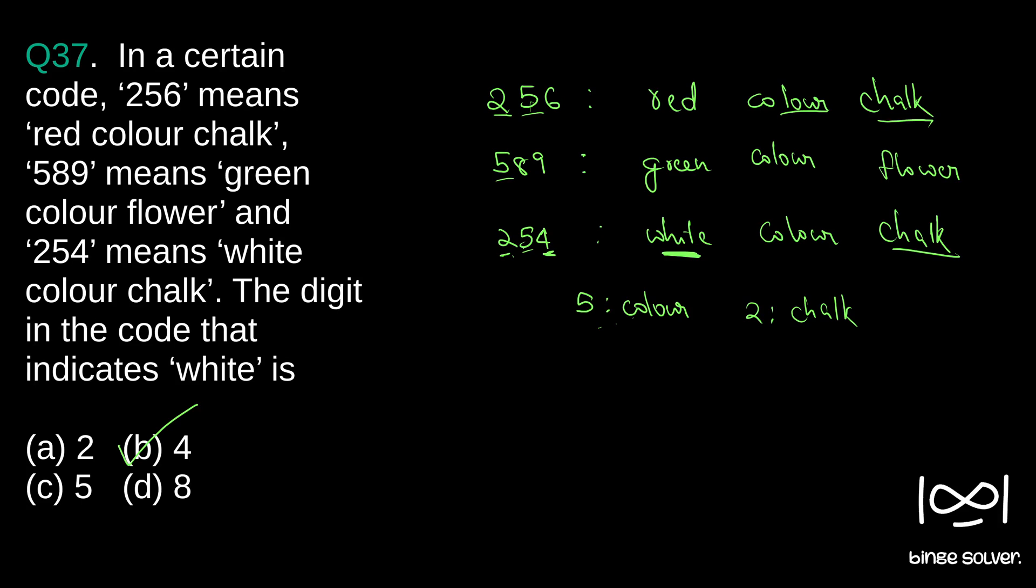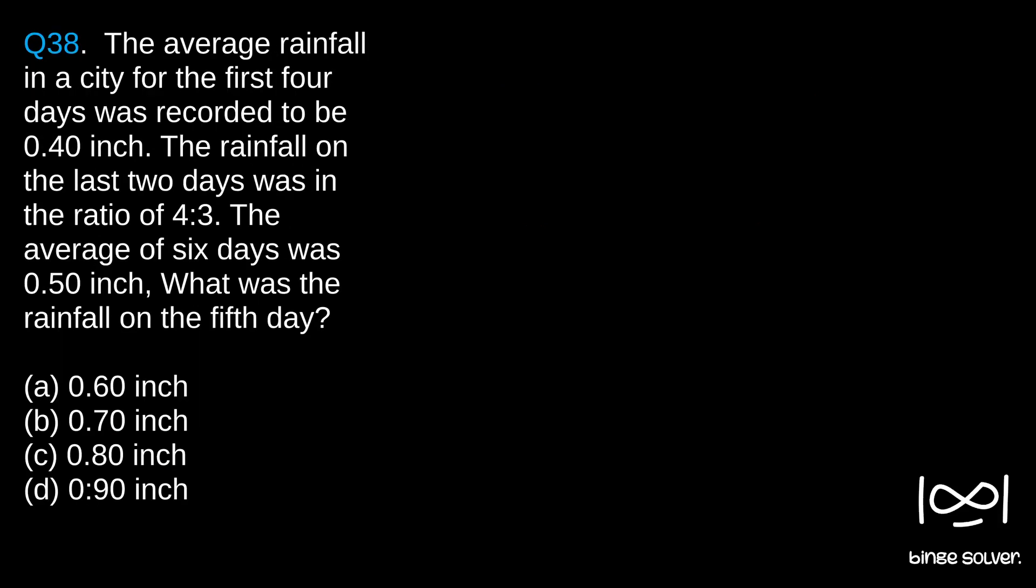Next question, question 38. The average rainfall in a city for the first four days was recorded to be 0.4 inch. The rainfall on the last two days was in the ratio of 4 to 3. The average of six days was 0.5 inch. What was the rainfall on the fifth day?